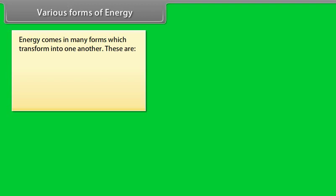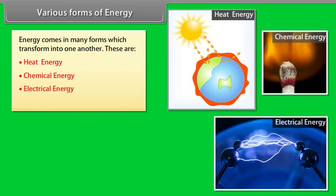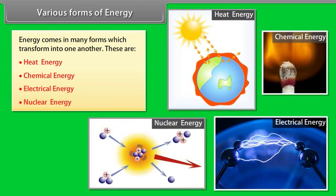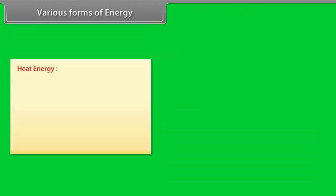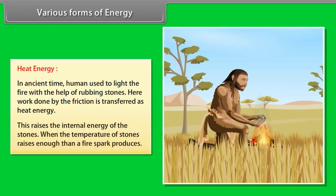Various forms of energy: Energy comes in many forms which transforms into one another. These are heat energy, chemical energy, electrical energy, nuclear energy. Heat energy: Let us take an example for better understanding. In ancient time, human used to light the fire with the help of rubbing stones. Here work done by the friction is transferred as heat energy. This raises the internal energy of the stones. When the temperature of stones raises enough, then a fire spark produces.